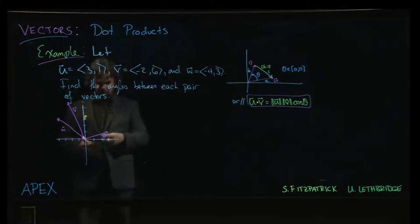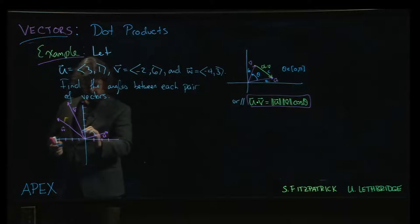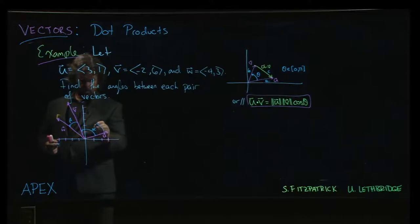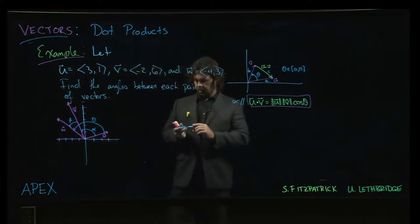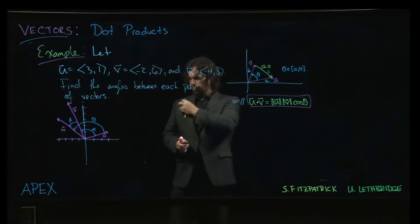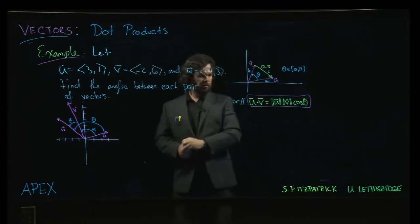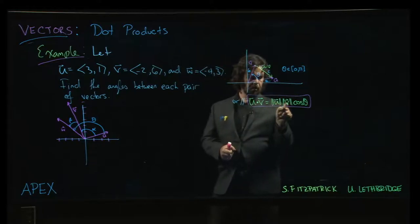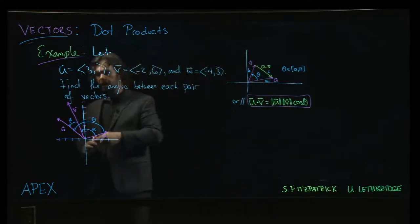And we are interested in the angles between these. So we have between u and v, maybe we'll call that alpha. Between v and w, we can call that beta. And we can also go from u all the way to w, and let's call that one theta. Alright, so we want to find those three angles. And we want to make use of the formula here. So of course, we're going to need to compute some dot products and some magnitudes. We'll do the magnitudes first.